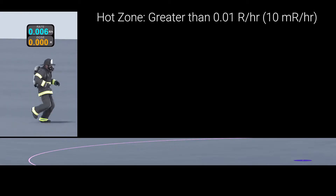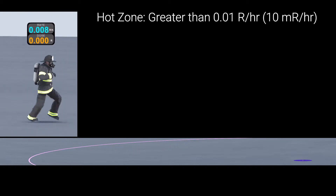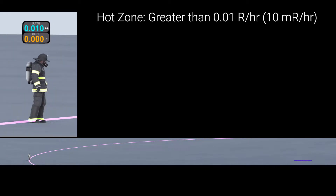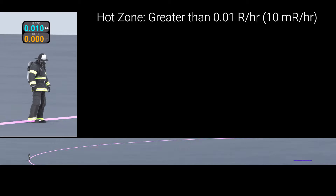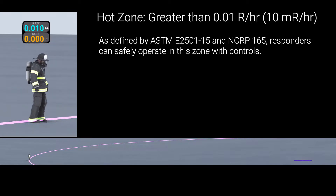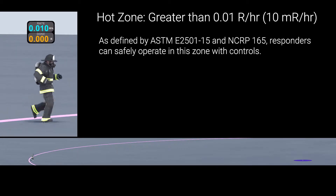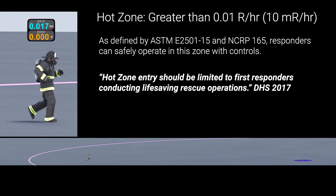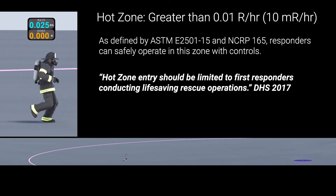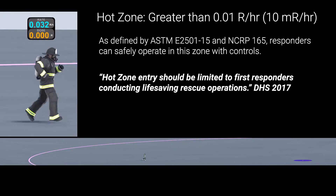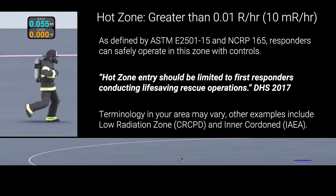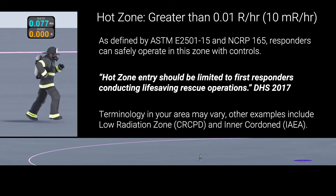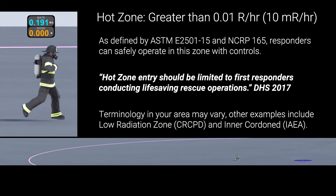This guidance uses the following hazard zone definitions. The hot zone is any exposure rate greater than 0.01 r per hour, or 10 milli r per hour. This zone can be safely operated in by responders for life-saving and property protection activities, provided that unnecessary activities and time spent in this zone is minimized. Naming conventions for this zone vary — consult your local doctrine.